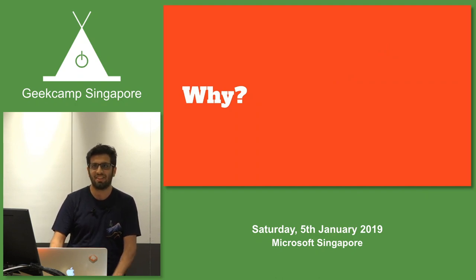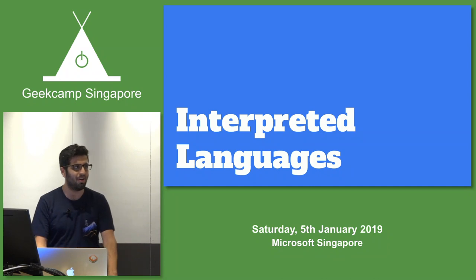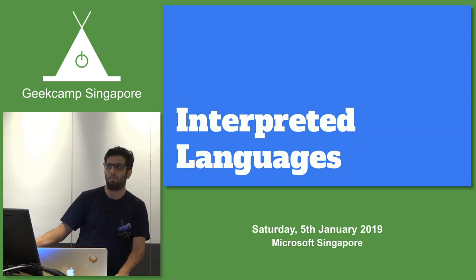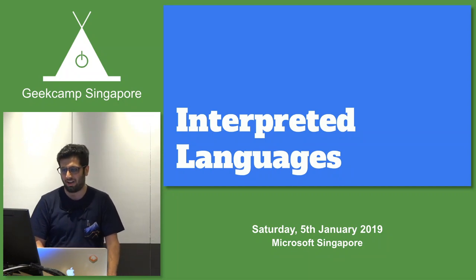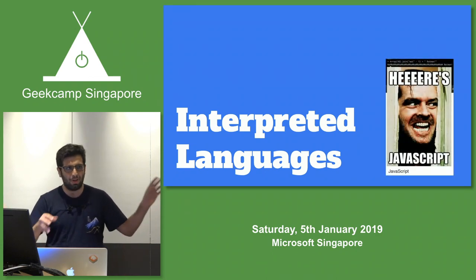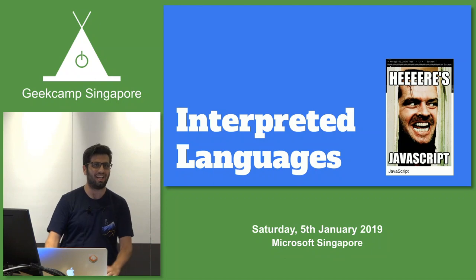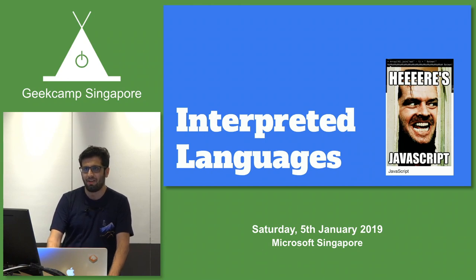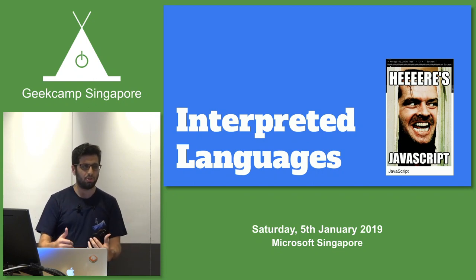Why are we talking about JIT compilers? The reason is because of our favorite friend, interpreted languages. Everybody loves interpreted languages. How many of you use interpreted languages at work? I'm sure most of you do. Everyone uses Python, JavaScript - almost everyone here uses them. And interpreted languages are interesting because their performance characteristics are very different.